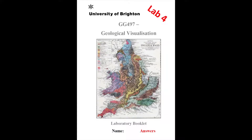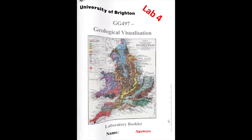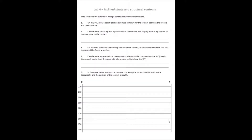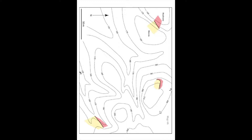Hi guys, welcome to lab number four of GG 497 Geological Visualization. This week our lab will involve using structural contours that we construct for inclined strata and to show how those structural contours can be used to complete maps for areas where we have poor exposure. The first half of the lab gives you a series of questions based on a partially completed map where we have three separate locations showing contacts between a mudstone in red and a breccia in yellow, and it's our job to complete this map based on the structural contours which we'll draw.